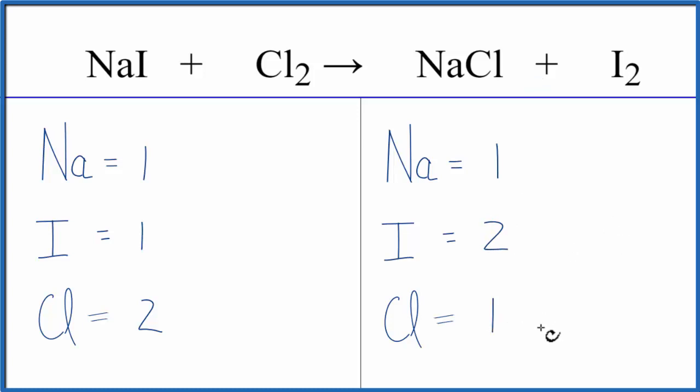It looks like we could balance the chlorines first. We could put a two in front of the NaCl. So now we have one times the two, that gives us two chlorines. Those are balanced. And for the Na, we have the one times the two, and now we have two sodium atoms.